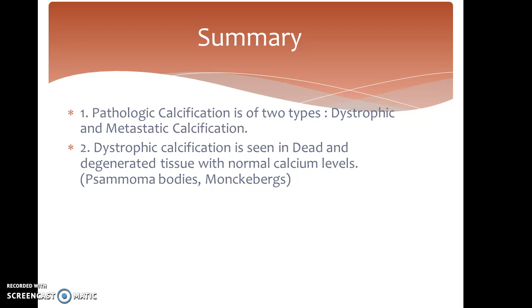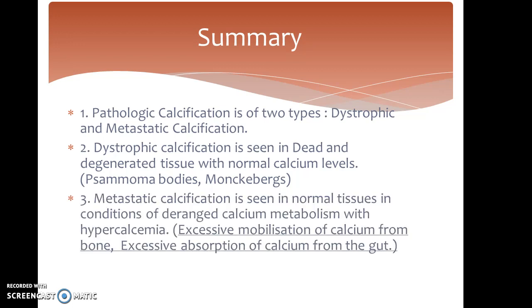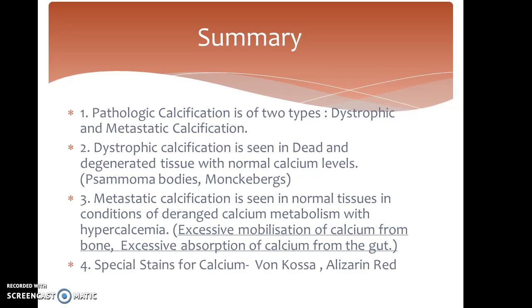Dystrophic calcification is seen in dead and degenerated tissue with normal calcium levels. Examples include psammoma bodies and Mönckeberg's medial calcific sclerosis. Metastatic calcification is seen in normal tissue in conditions of deranged calcium metabolism with hypercalcemia, such as excessive mobilization of calcium from bone or excessive absorption of calcium from the gut. Special stains for calcium include Von Kossa and Alizarin red.